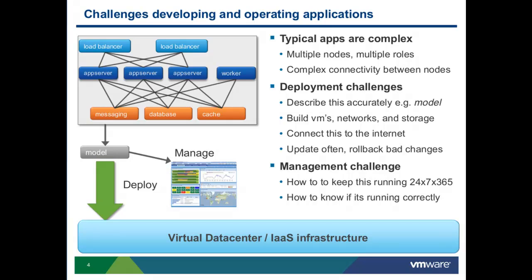Not surprisingly, if you have a lot of choices, there is also a lot of complexity in today's world where developers and operations are trying to build, maintain, and deploy applications. A typical app may look like this picture — with multiple app servers, load balancers, databases, messaging systems, caching, and offline worker jobs. If I'm a developer who just wants to write business logic, I don't want to wire all these middleware components.